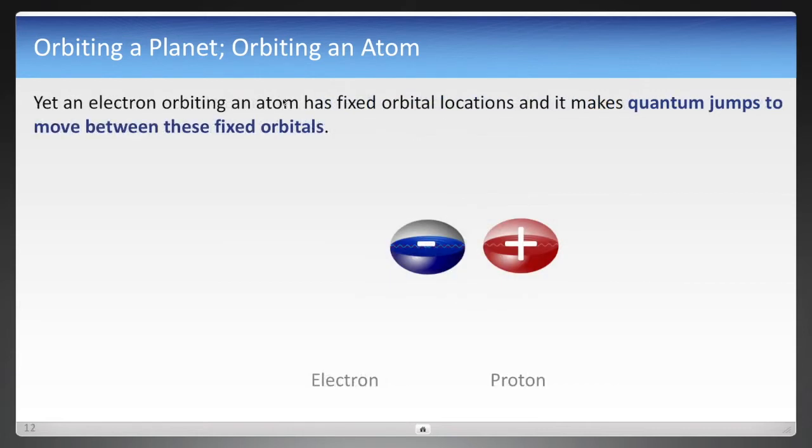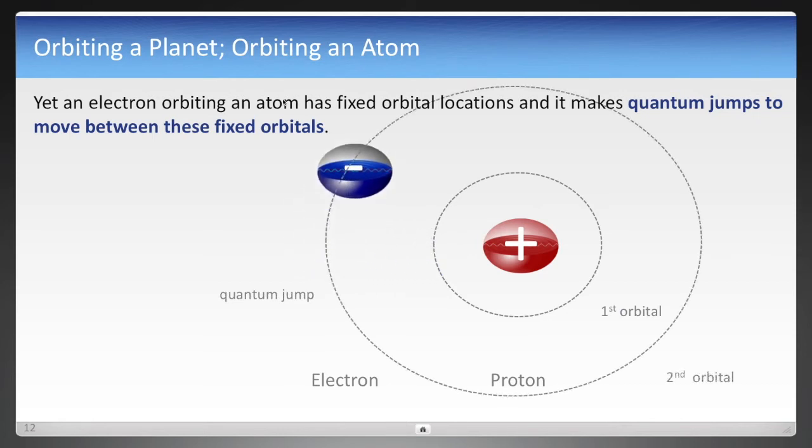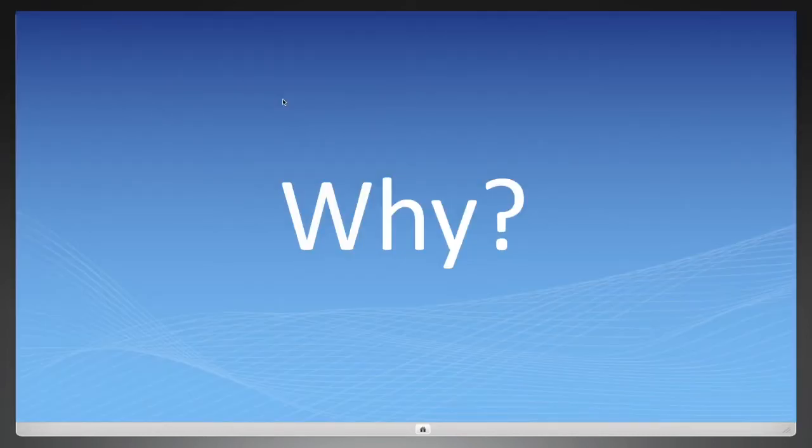But an electron in the atomic nucleus does not do the same thing as it orbits a proton. It has what's called quantum jumps. In this illustration, it just jumped from the first orbital to the second orbital. It would be the equivalent of that satellite going from a thousand miles, but it can't go to a thousand and one. It can jump to four thousand miles. And again, why? Why does it take those quantum jumps?